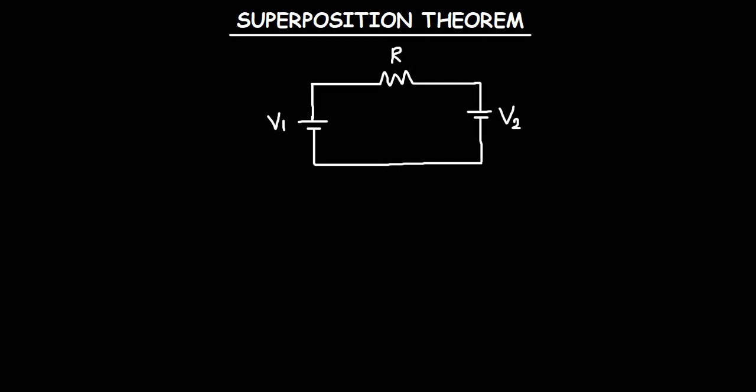In this lesson, we are going to learn about the superposition theorem, which says that the current or the voltage across any element in a multiple source linear circuit can be found by taking the algebraic sum of the current or the voltage across that element due to each individual source acting alone.